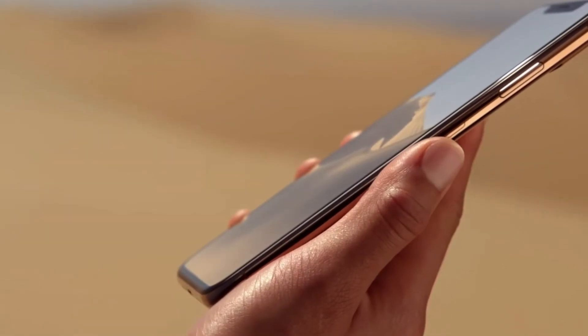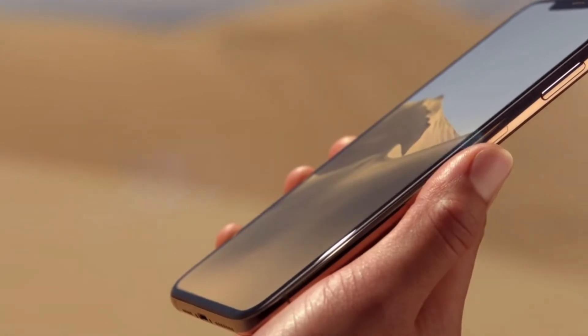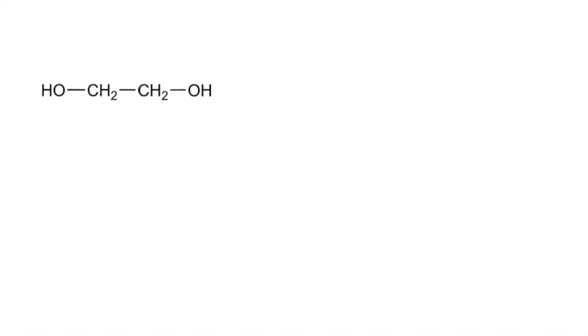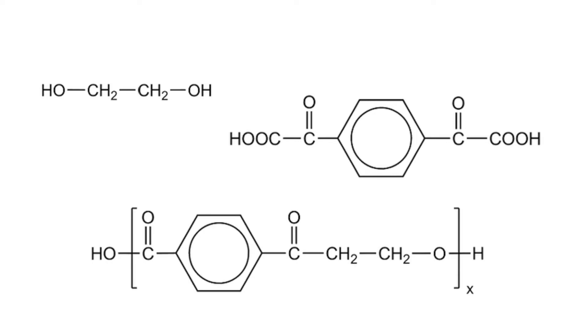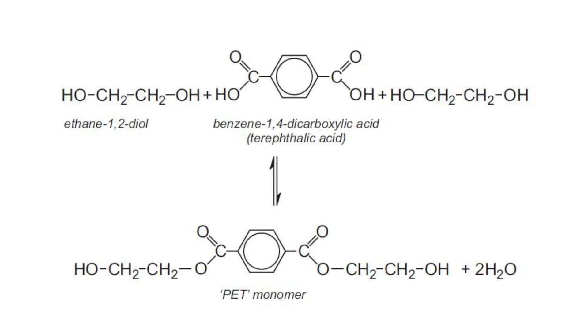The manufacturing of PET involves the polymerisation of ethane 1,2-diol reacting with benzene 1,4-dicarboxylic acid. There are two routes which are possible to produce the monomer necessary for this reaction. The preferred route is to carry out a direct esterification which is self-catalyzed by the carboxylic acid group.